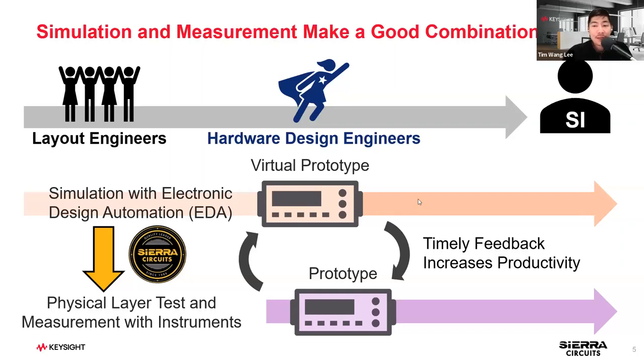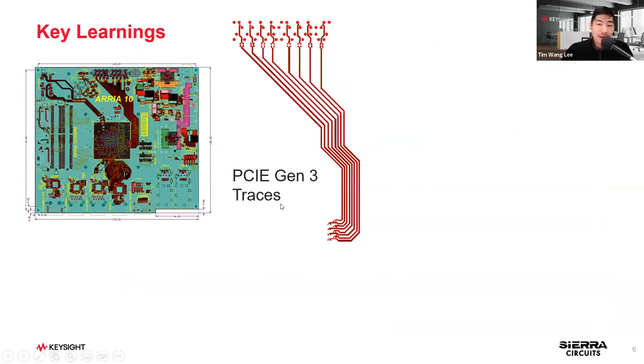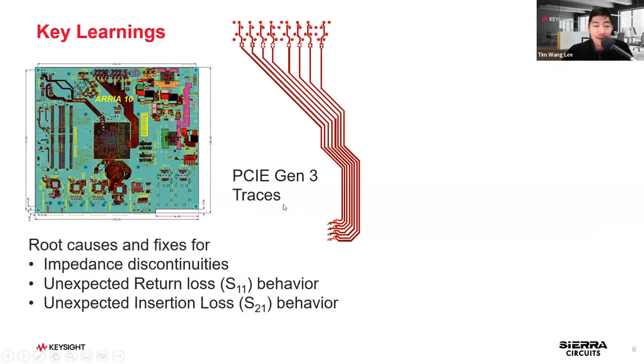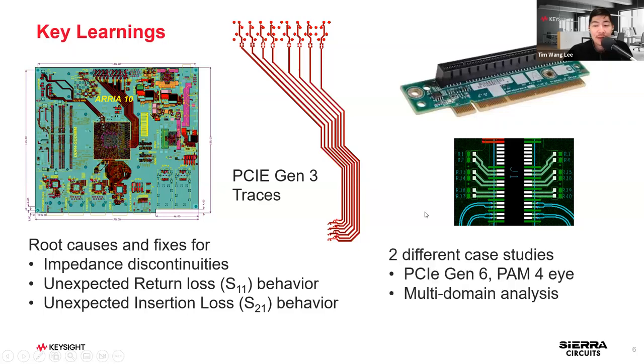Today's learning objectives are threefold. First, we're going to take a look at PCIe Gen 3 traces and learn about the root causes and fixes for impedance discontinuity, return loss, and insertion loss. Then Mike will look at connectors and talk about case studies of PCIe Gen 6, PAM 4, eye diagram, and multi-domain analysis.